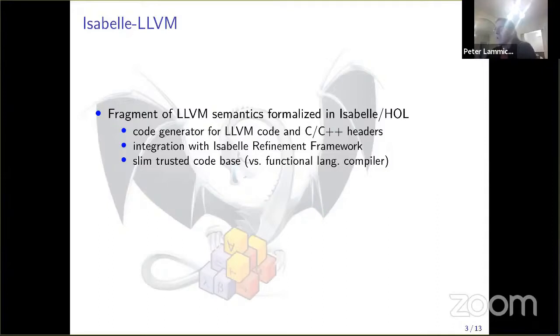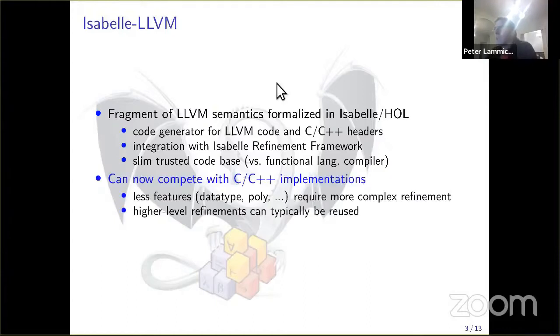We only have to trust the translation from intermediate representation to machine code, and we skip the high-level step. LLVM is a widely used compiler, so we can hope it is well tested. We can now compete with C or C++ implementations because we don't have any inherent deficit of speed caused by the compiler anymore.